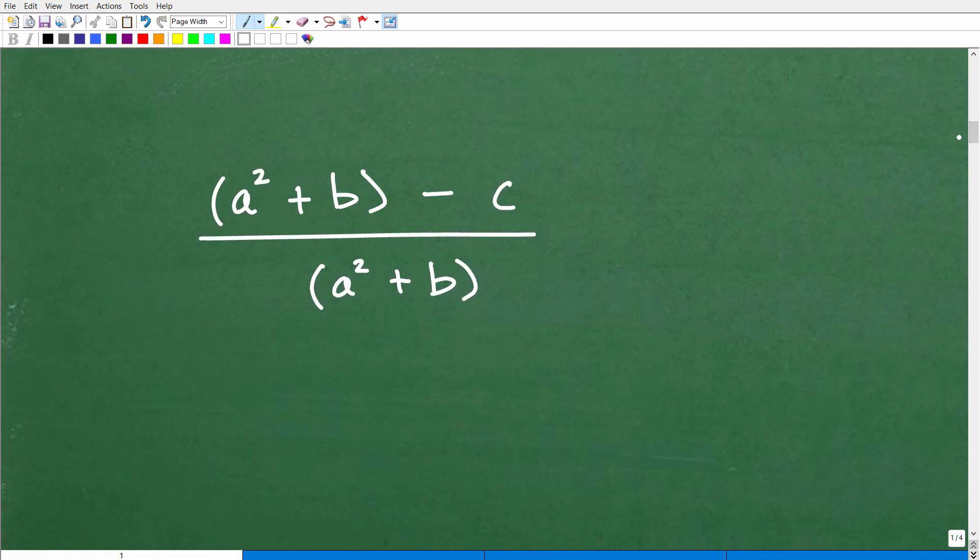Okay. So let's say we had this expression right here. Okay. A squared plus B, parentheses minus C over A squared plus B. Again, it's very tempting to be able to just cross cancel these things. Okay. So now why is this the case? Well, because you cannot cross cancel these things right here. You can only cross cancel something called factors. Okay. Factors. So what's a factor?